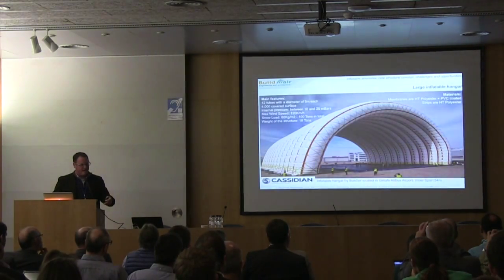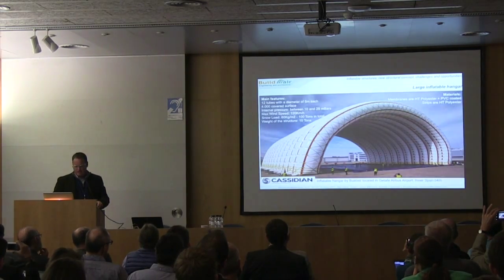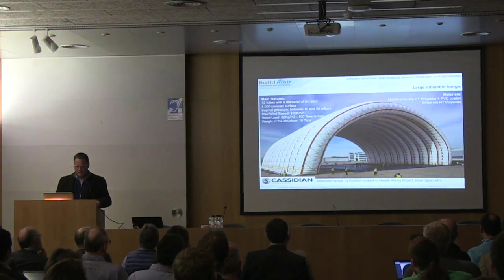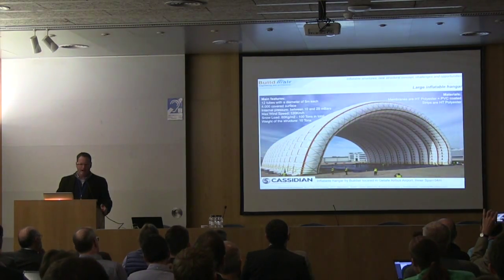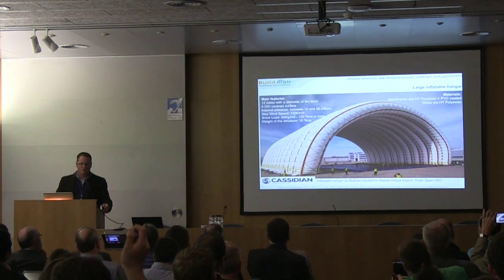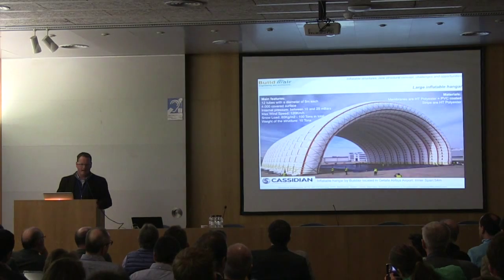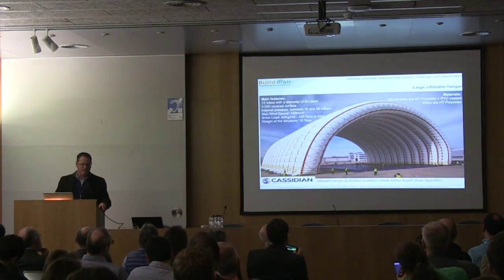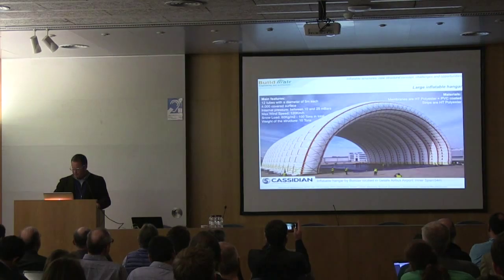This is the result of this first structural concept. We manufactured this large hangar for Kasidian. It is made of 12 inflatable tubes, each five meters in diameter — very, very large. You can see the scale compared with the people around. We cover 4,000 square meters. The inner pressure varies between 10 and 25 millibars according to wind speed. We have an intelligent system that increases the inner pressure as the wind increases, so we don't stress the structure unnecessarily and we reduce energy consumption. But in case of strong winds, we need the structure to become stiffer.